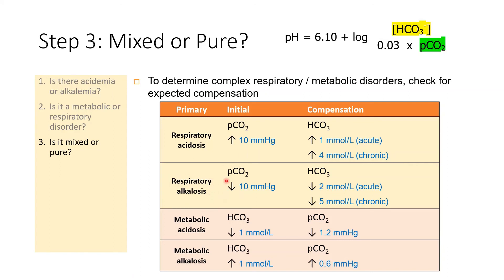If it is a primary respiratory alkalosis, pCO2 falls, and for every 10 mmHg fall in pCO2, bicarbonate will also fall — by 2 mmol/L in acute respiratory alkalosis, and by 5 mmol/L in chronic respiratory alkalosis. For metabolic disorders, in metabolic acidosis, bicarbonate falls, and for every 1 mmol/L drop in bicarbonate, there is a corresponding drop in pCO2 by 1.2 mmHg. In metabolic alkalosis, for every 1 mmol/L increase in bicarbonate, there is a corresponding increase in pCO2 by 0.6 mmHg.